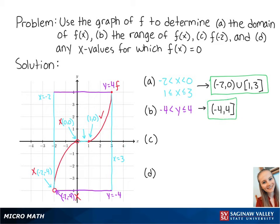For letter c, f of negative 2 is the value of the function when x is equal to negative 2. Looking at the graph, we can see that when x is equal to negative 2, the function does not exist. This means that f of negative 2 does not exist.